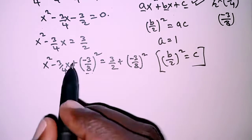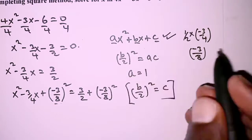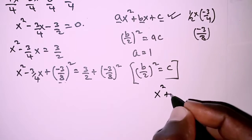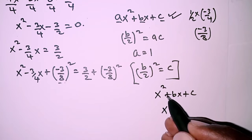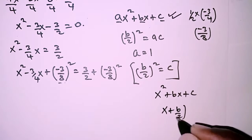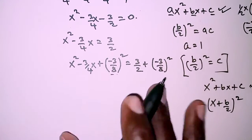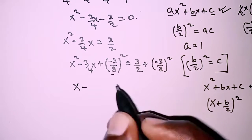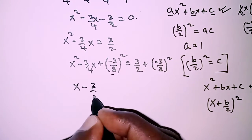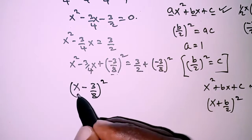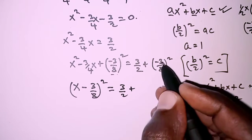Now we factorize the left hand side. Given a perfect square of the form x squared plus bx plus c, we factorize by writing x plus b over 2, all squared. Applying that here, the sign that follows x is minus, and one half of b — where b is 3 over 4 — gives 3 over 8. So the left hand side factorizes as x minus 3 over 8, all squared. On the right hand side we have 3 over 2 plus 9 over 64.